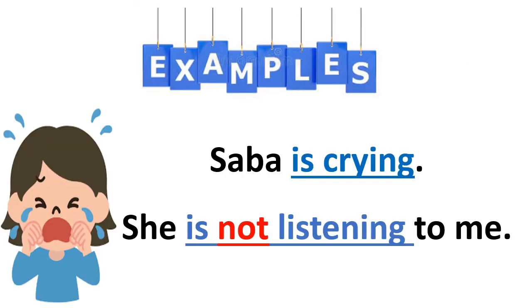The best way to learn negative sentences is to compare things that are happening with things that are not happening. For example: Sabba is crying — that is a positive sentence. She is not listening to me — that is negative. Notice that not is placed between the helping verb is and the present participle form listening.